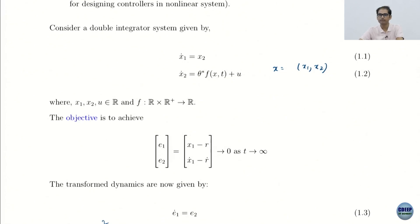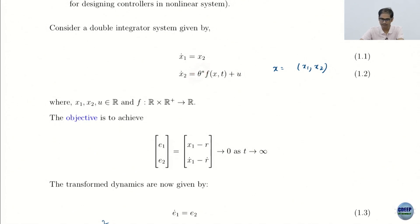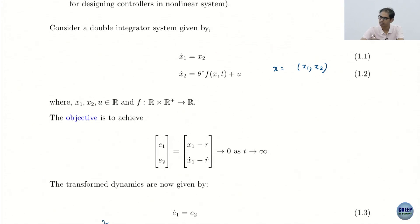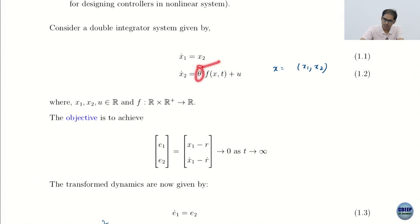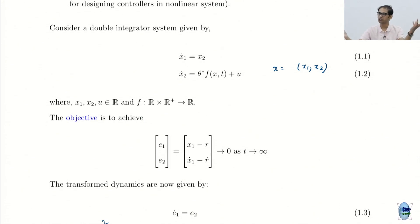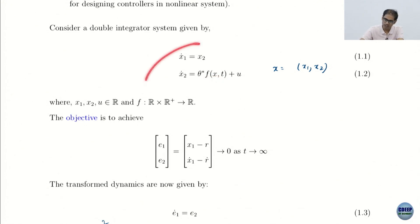Suppose we have a nonlinear double integrator — we saw a double integrator, and now we have the nonlinear version. This is where the unknown parameter appears. The function could easily be a summation Σ θᵢ* fᵢ + u — like a function approximator. It does not matter if there is 1, 10, or 100 terms; you can still use adaptive control ideas. The unknown θ* could represent inertias or parameters for identifying a general function, with f being the basis functions. What we want is to achieve tracking.